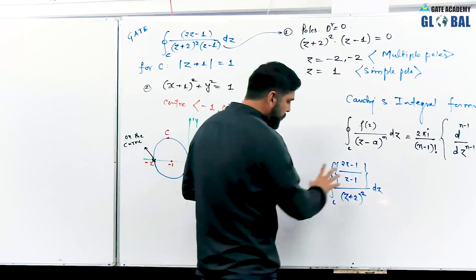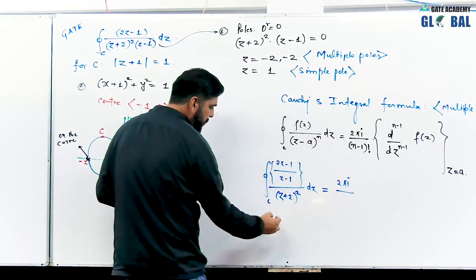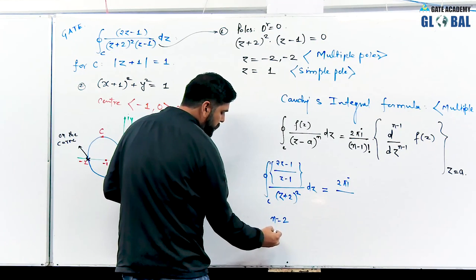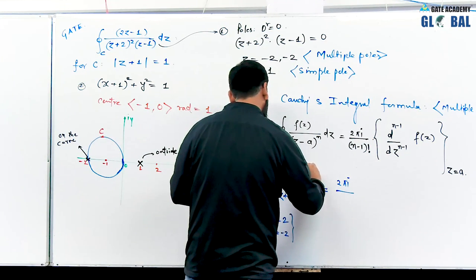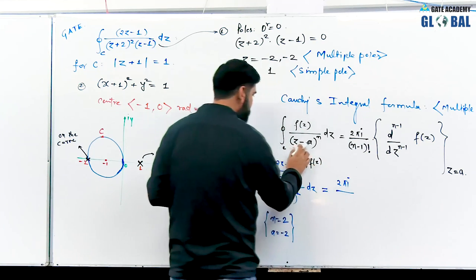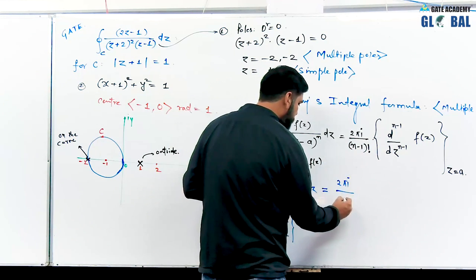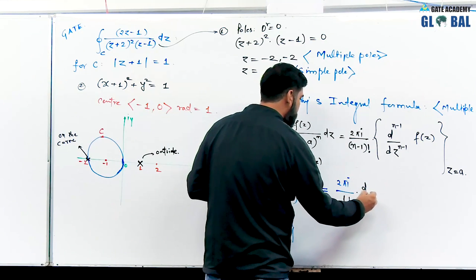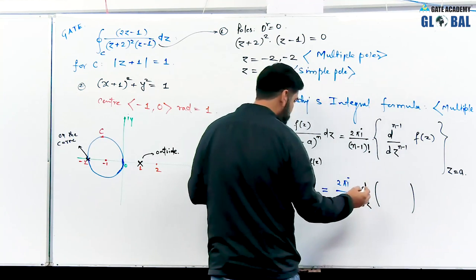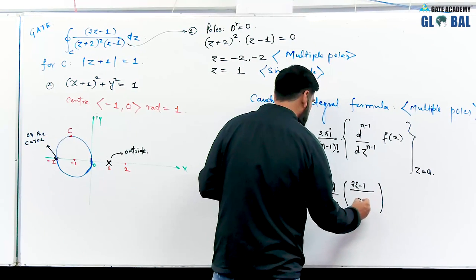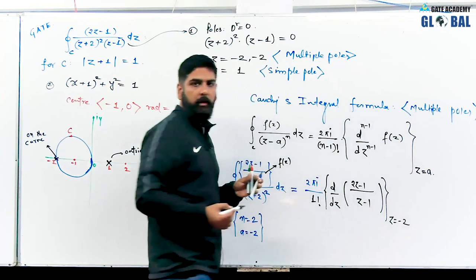Directly applying the formula: 2 pi i, with n equal to 2, so n minus 1 equals 1 and 1 factorial equals 1. We take the first derivative of f(z) equals 2z minus 1 over z minus 1, then evaluate at z equals minus 2. Using the quotient rule: derivative is z minus 1 whole square in denominator, numerator is differentiation of 2z minus 1 times z minus 1 minus 2z minus 1 times differentiation of z minus 1.